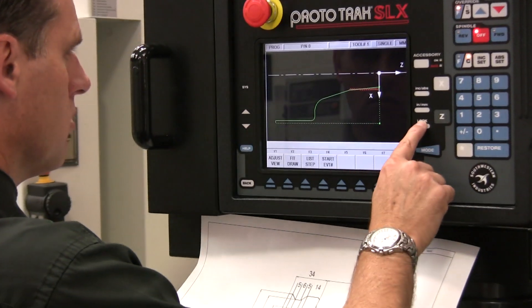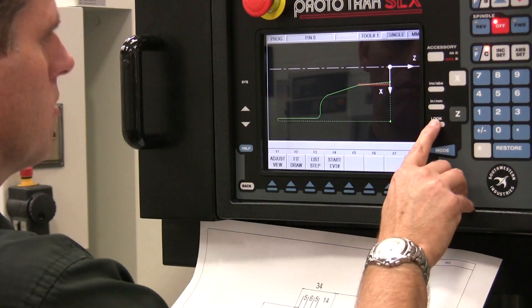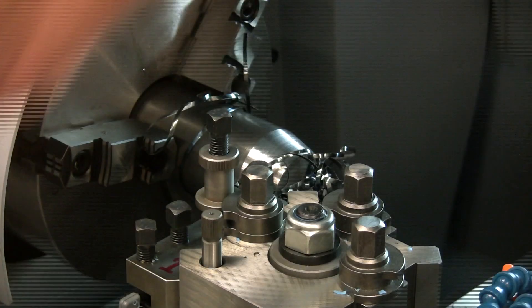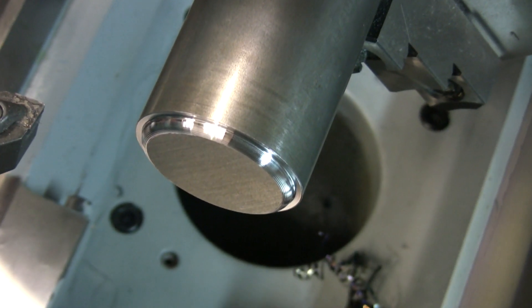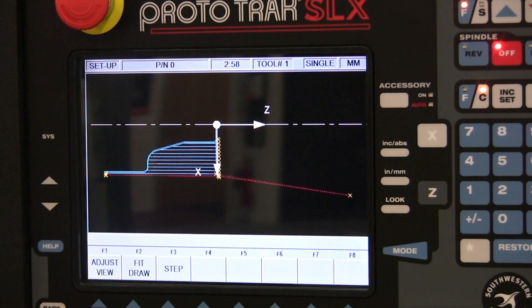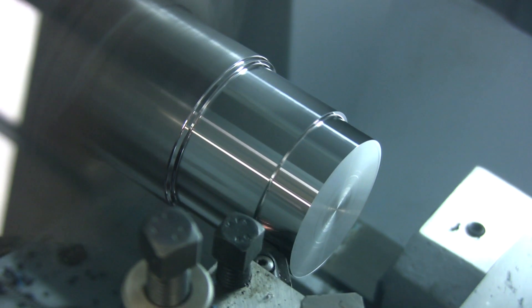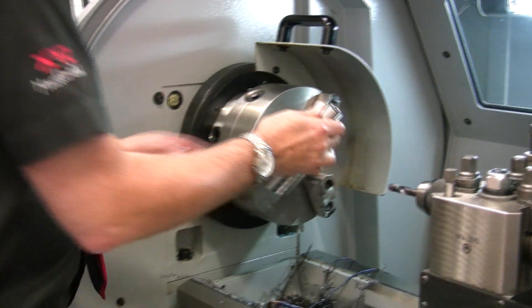The simple look of the SLX control belies its production abilities, with tapers and radii machined in just moments. Powerful cycle events that create roughing passes automatically means complete parts are quickly and easily made.